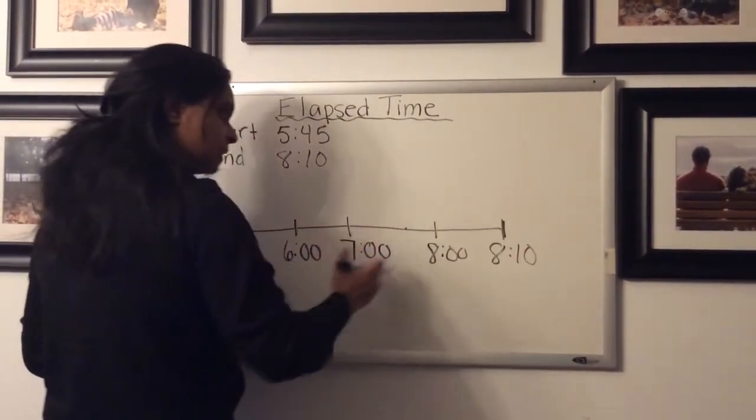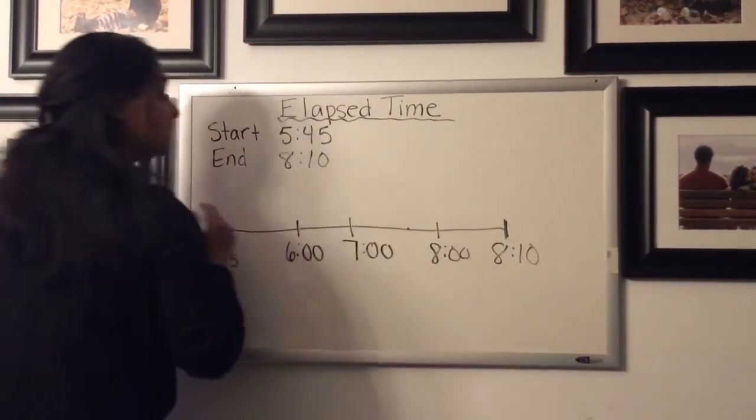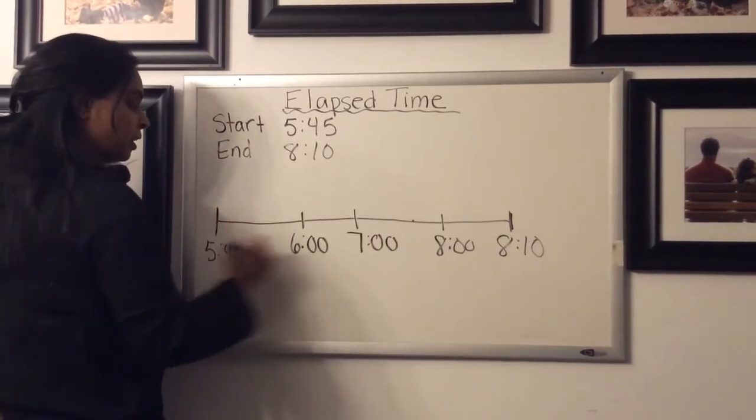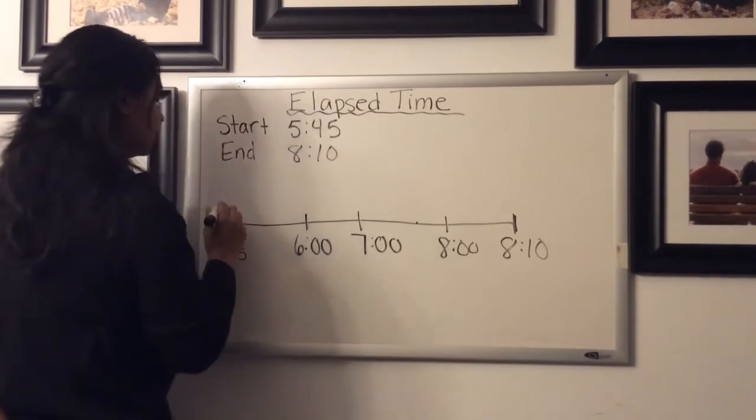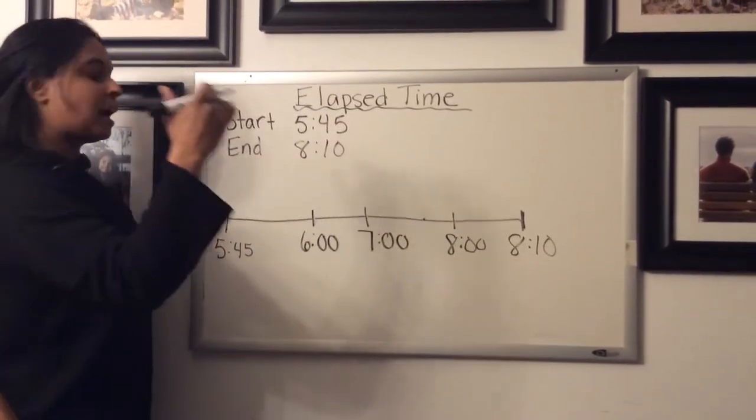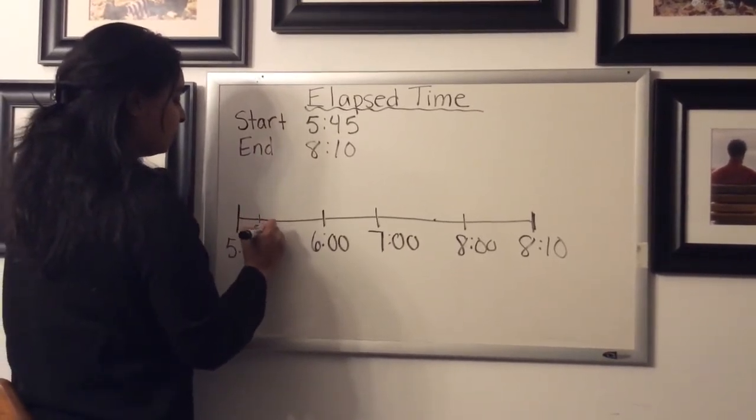Now that I've got my timeline planned out, now I can figure out how much time is in between all of these and slowly count my way up. So 5:45 to six o'clock. Now, if we're not sure how much time that is, what you'd want to do is you'd want to count by fives just like you would around the clock.